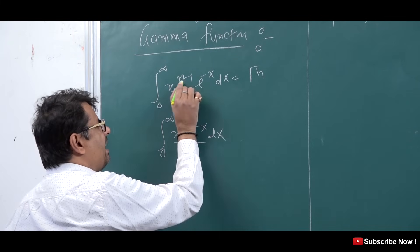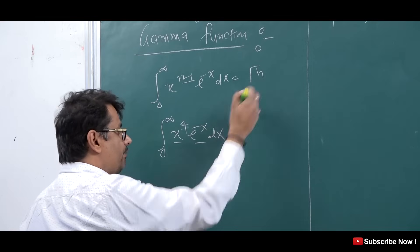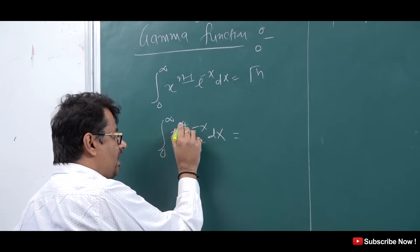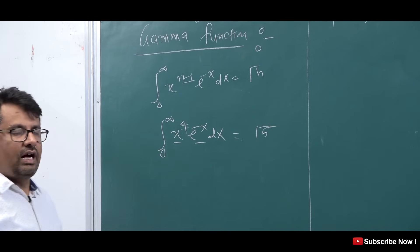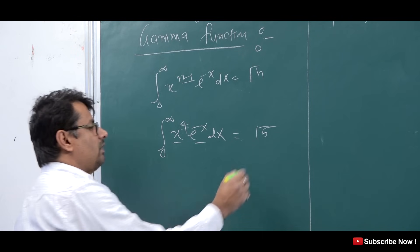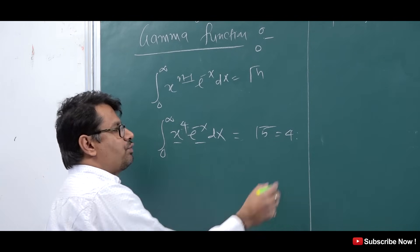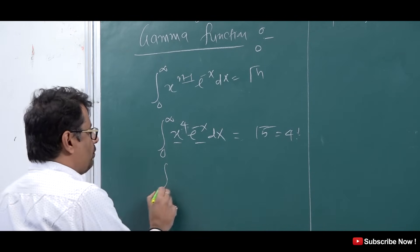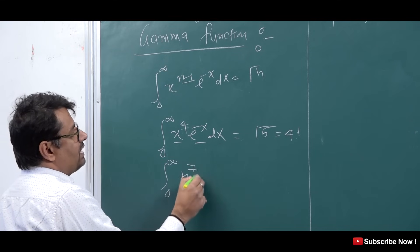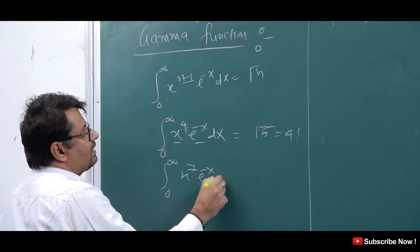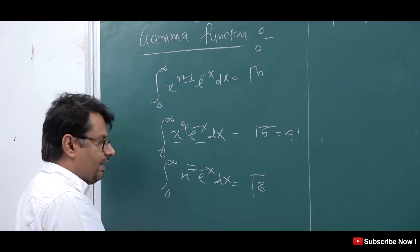Here the power is 2, so n−1 = 2, meaning n = 3, giving us Gamma(3). Since the power is 2, n = 3, so the answer is Gamma(3) = 4! = 24. Similarly, for ∫₀^∞ x⁷ e^(-x) dx, the value is Gamma(8). Clear?